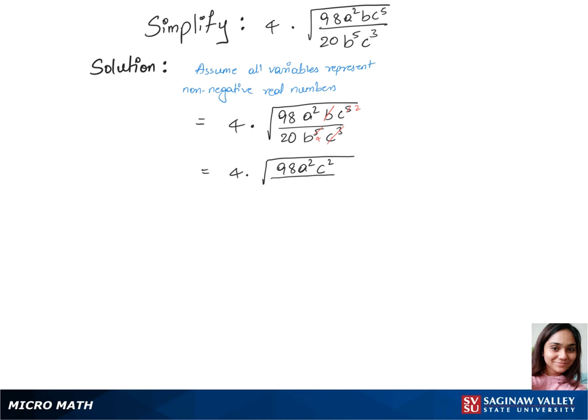In our next step we'll write 4 times, we'll separate the square root between the numerator and denominator. So that's 4 times square root of, we can split 98 to 49 times 2, times we have a² times c², over square root of we can write 20 as 4 times 5, and we also have b⁴.